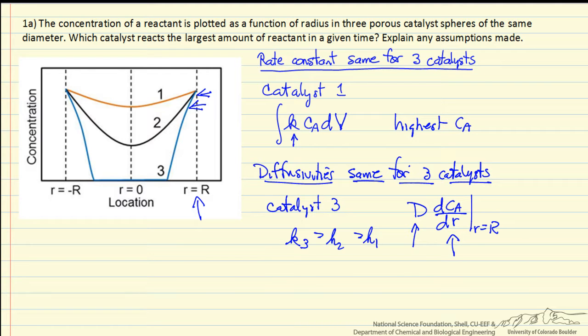So you can see, just from these concentration gradients, comparing different catalysts, we need more information to reach a conclusion as to which is reacting the most material per time.